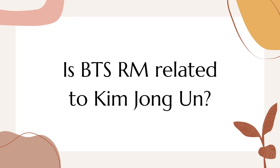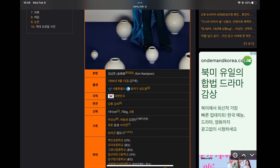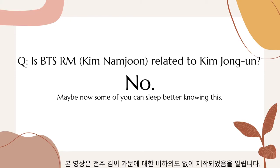With the concept of clans now in mind, let's go back to the first two questions of the video. Is Kim Jong-un related to Kim Nam-joon from BTS? Upon a quick Google search, we can see that Kim Jong-un is from the Jeonju Kim clan, meaning he is part of a clan whose ancestor hailed from Jeonju, North Jeolla province. When we search Kim Nam-joon, we can see that he is part of the Gangneung Kim clan from Gangwon province. Now we know that as their clans are different, they're not related.